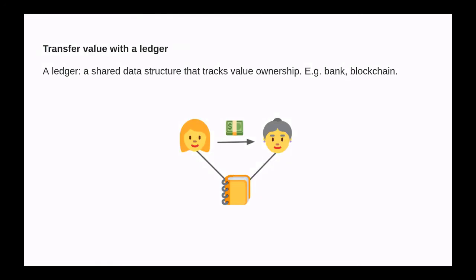In our model, we represent transfer value by ledgers. A ledger is a shared data structure that tracks value ownership. This is a useful abstraction that can represent, for instance, a bank or a blockchain.